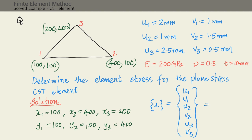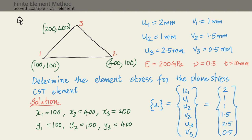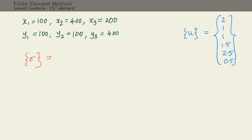The nodal displacement vector u is written in the order u1, v1, u2, v2, u3, v3. We copy the values from the question. The problem asks us to find the stress sigma, and for a plane stress problem there are three components: sigma x, sigma y, and tau xy.